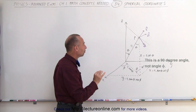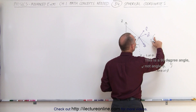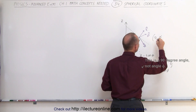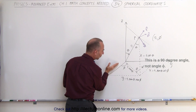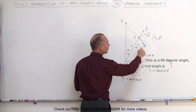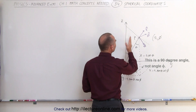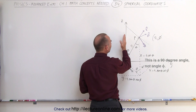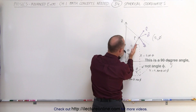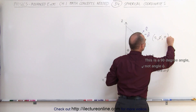Every point in space like point P will have coordinates: R, which is simply the distance from the origin to the point; phi, which is the angle from the x-axis in a counterclockwise direction to the line drawn from the origin to the point directly below the point in space on the xy plane; and theta, the angle between the z-axis and the position vector. These are the three coordinates in spherical space.